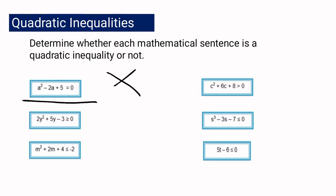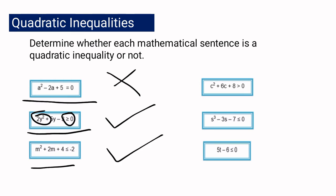Number two: 2y squared plus 5y minus 3 is greater than or equal to 0. This is a quadratic inequality. It is in the second degree and it uses an inequality symbol, which is greater than or equal to. Number three: m squared plus 2m plus 4 is less than or equal to negative 2. This is also a quadratic inequality — it is in the second degree and it uses an inequality symbol.